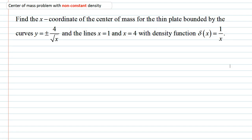This is a center of mass problem where the density function is not constant. We're going to find the x-coordinate of the center of mass for the thin plate bounded by the curves y equals plus or minus 4 over root x, and also by the lines x equals 1 and x equals 4. The density function is a function of x where 1 over x will determine what the density is at a point in our region. We're going to start off with a graph of the region.